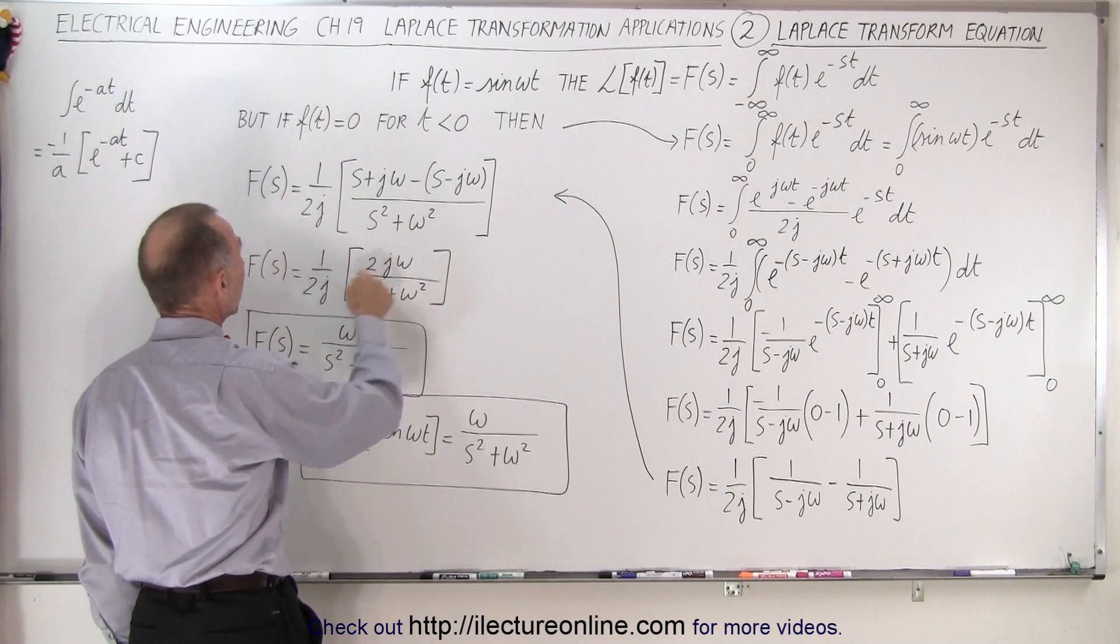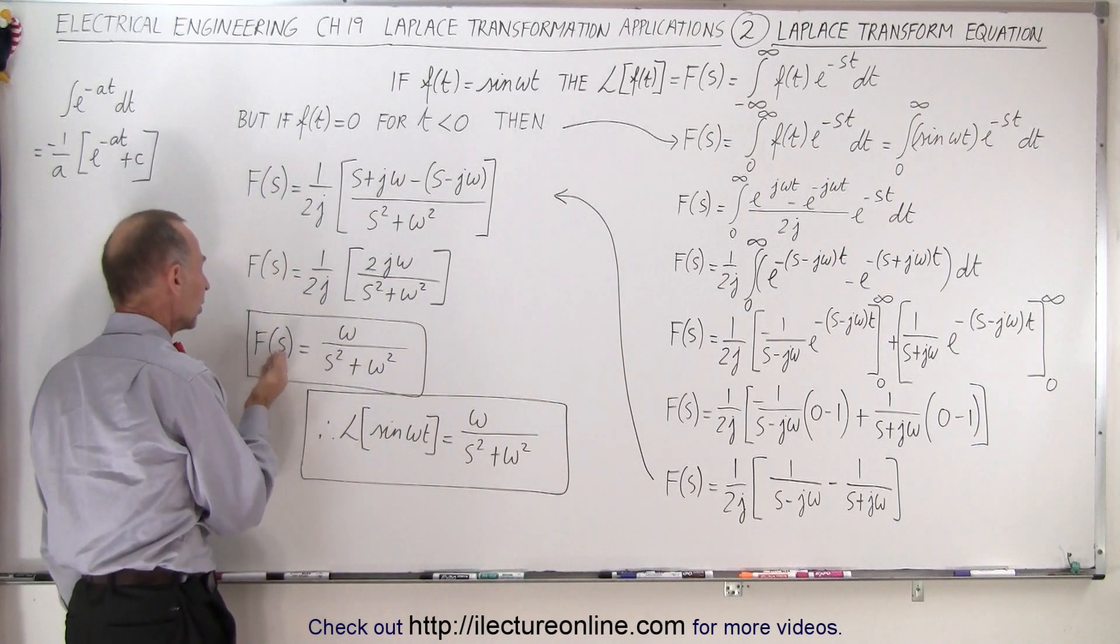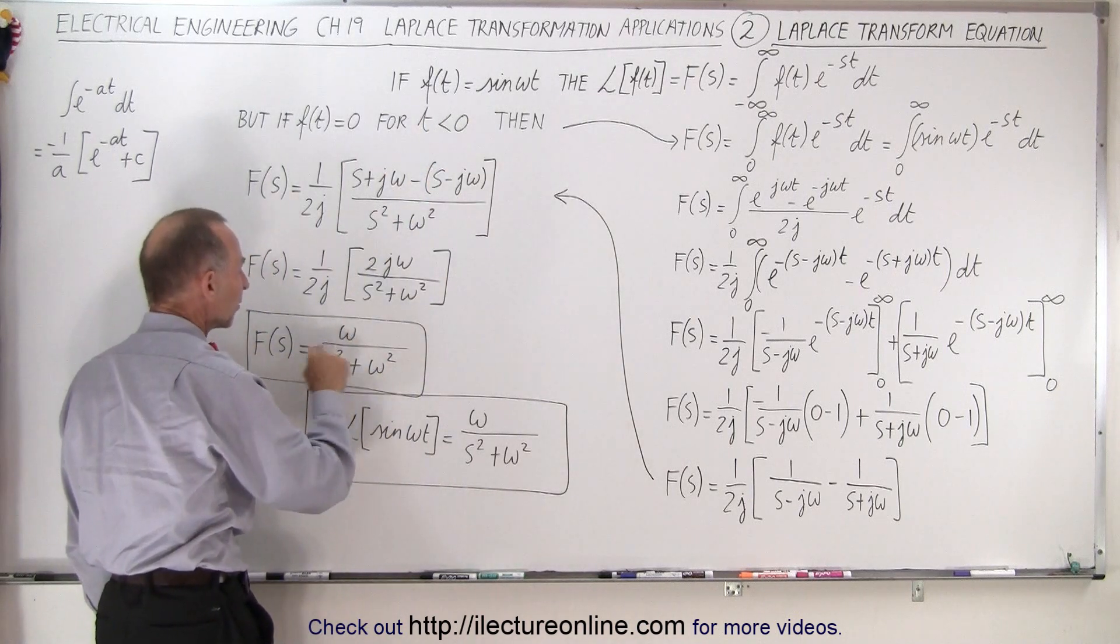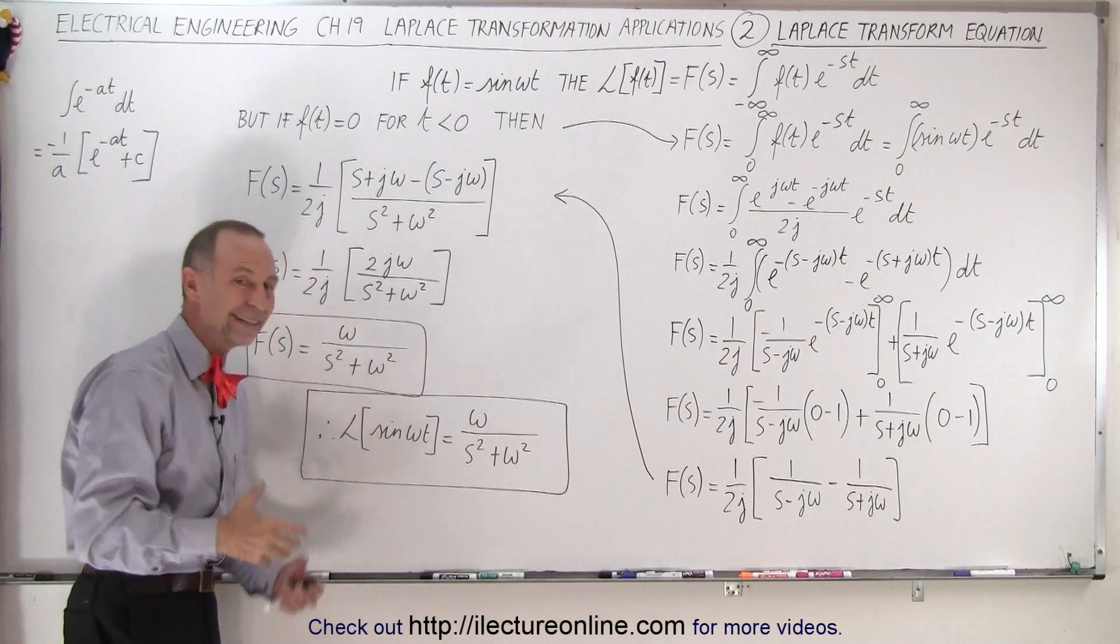Then you see that the 2j in the numerator here cancel out the 2j in the denominator, and finally the Laplace transform of our sine omega t is simply omega divided by s squared plus omega squared, and of course s squared that's in the s domain.